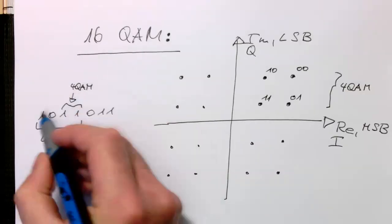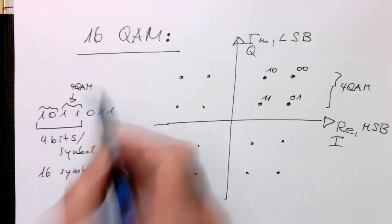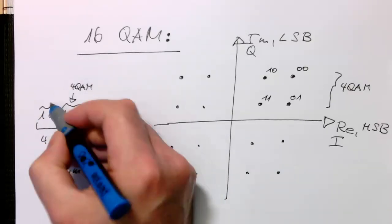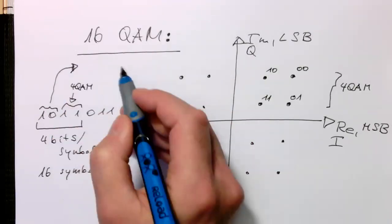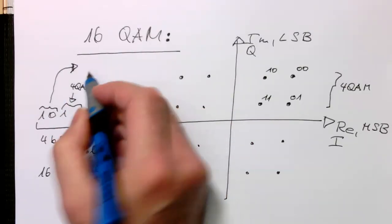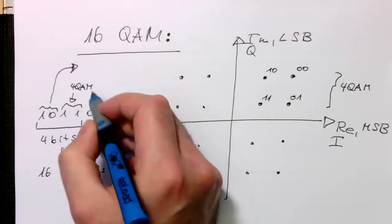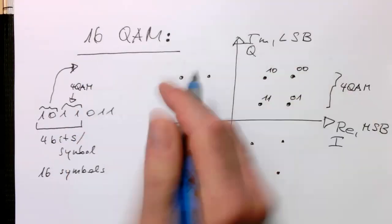And so these, and then we just use in the same fashion these two bits here, these two bits here, these two bits here. And these higher bits just decide if we flip this 4QAM pattern into the other quadrant.